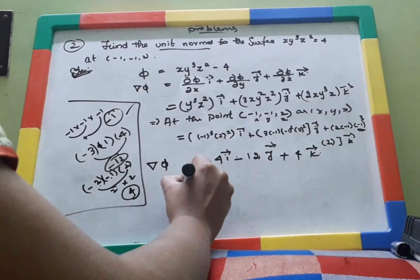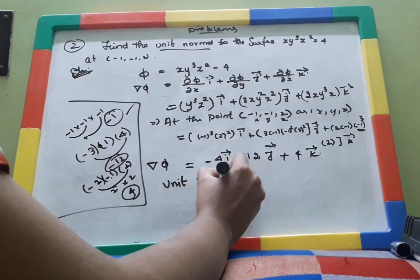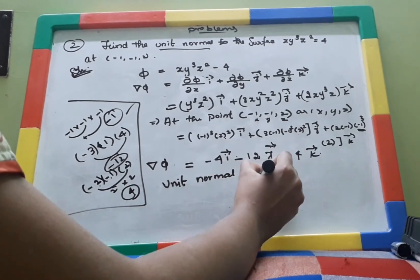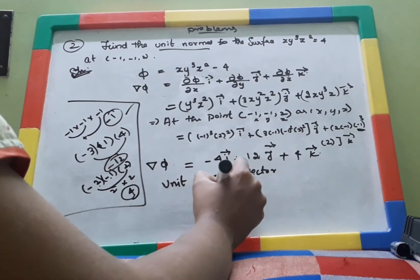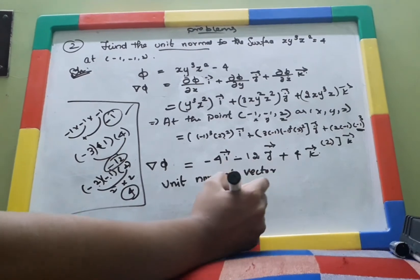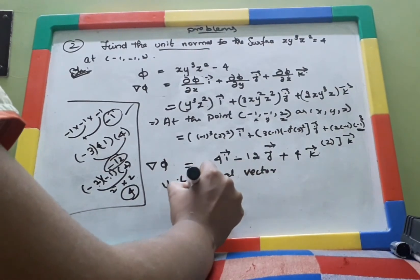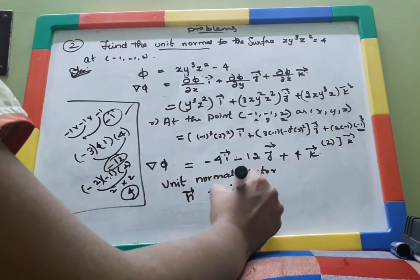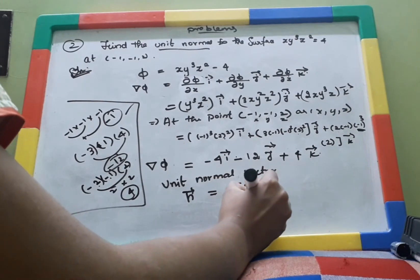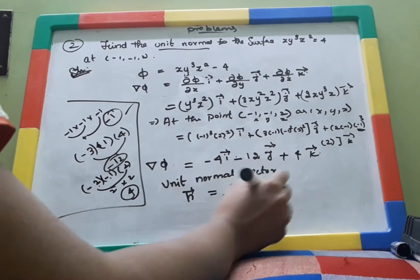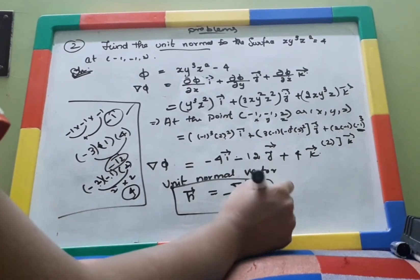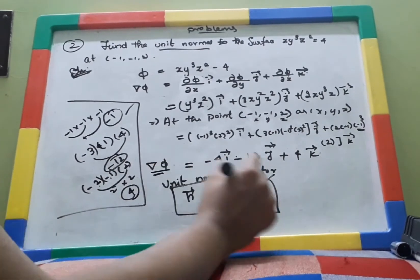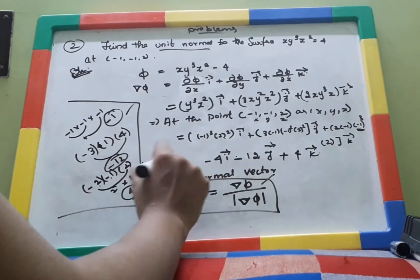The question asks us to find the unit normal to the surface. Having found del ψ, we now use the unit normal vector formula: n̂ = del ψ / |del ψ|. This formula was introduced earlier.